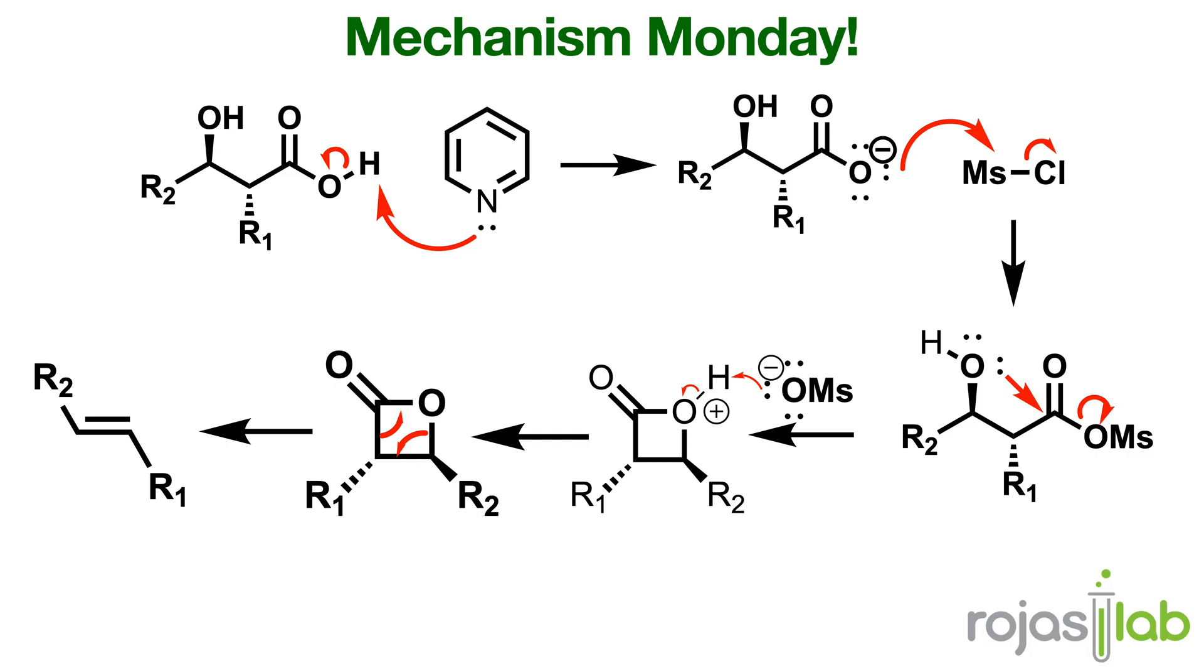This newly formed gas can just leave the system, allowing us to form our alkene in high concentrations. This is an elegant yet simple reaction to form 1,2-disubstituted trans alkenes.